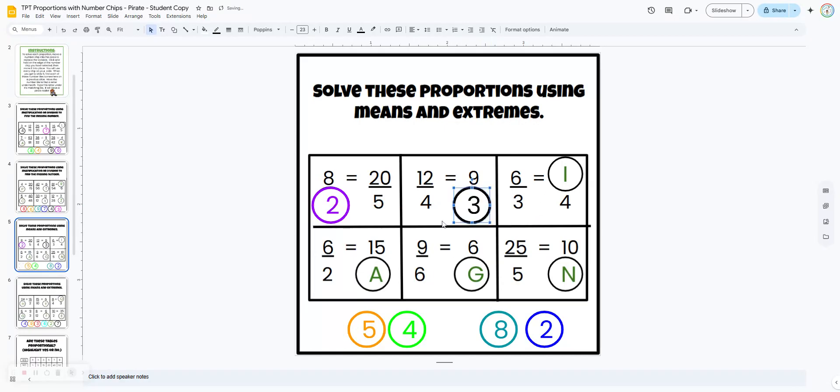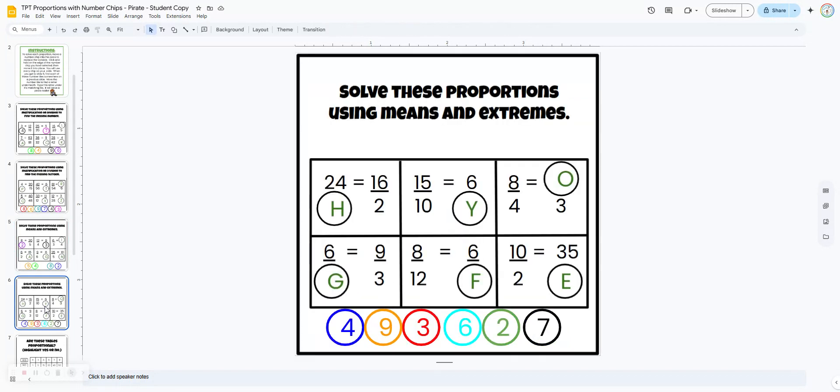If these numbers were larger they would have to set up an equation. So 9 times 4 equals 12 times x and then solve for the variable. They're going to do the same thing on slide 6.